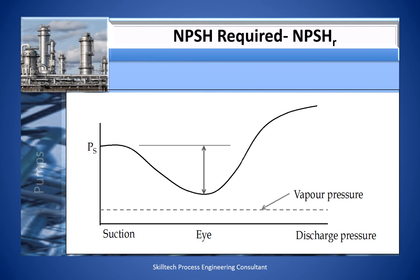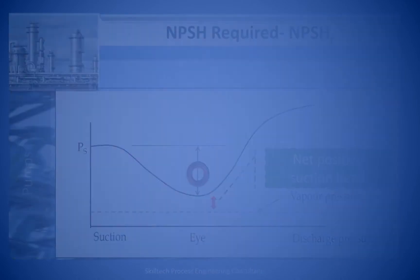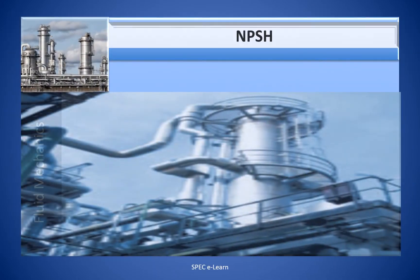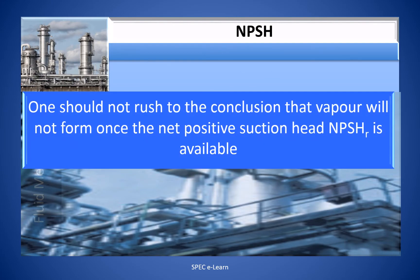This figure illustrates the variation of pressure from suction to discharge typically occurring in a centrifugal pump. The reduction of suction pressure at the pump inlet is due to liquid acceleration at the impeller eye. Note that, in spite of the reduction in pressure at the suction line, net positive suction head is available at the eye of the impeller to prevent bubble formation.